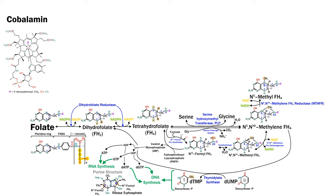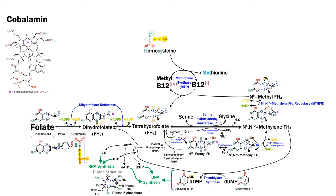The first and most important role of B12 is as a cofactor attached to the enzyme methionine synthase, which exists in the cytosol and uses the methyl form. B12 donates its methyl group to homocysteine, converting it to methionine. At this point, the cobalt ion changes to an unstable +1 oxidation state and rapidly accepts a replacement methyl group from the N5-methyl tetrahydrofolate, converting it back to tetrahydrofolate.